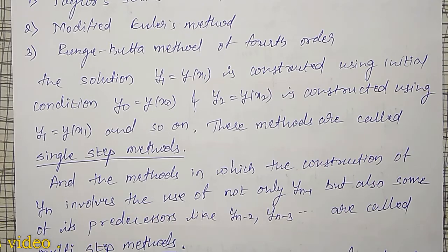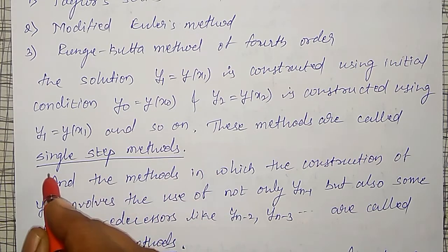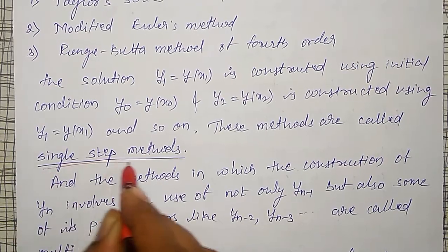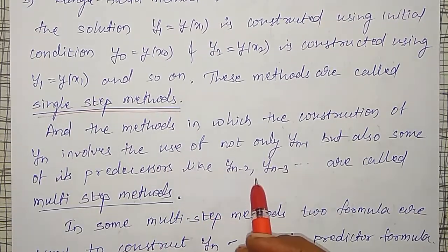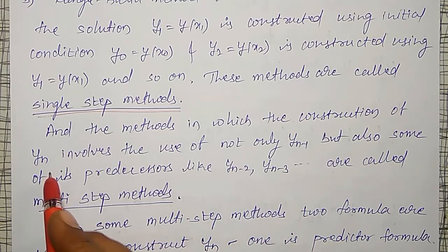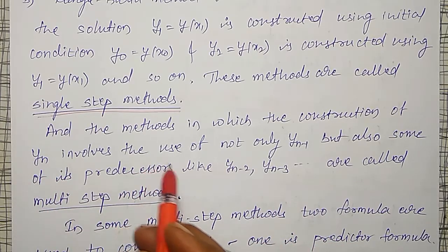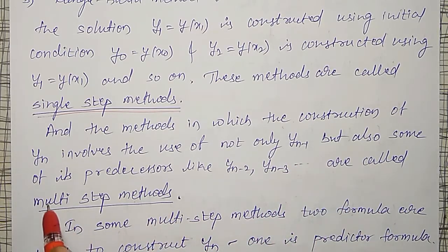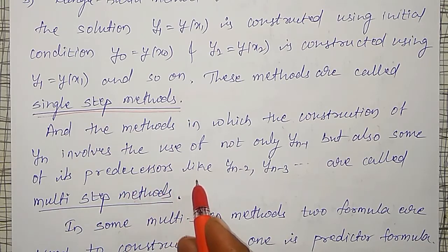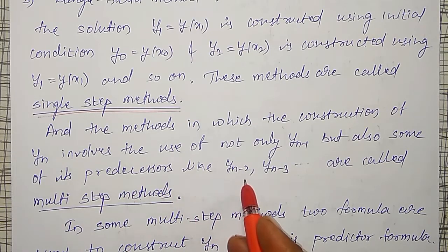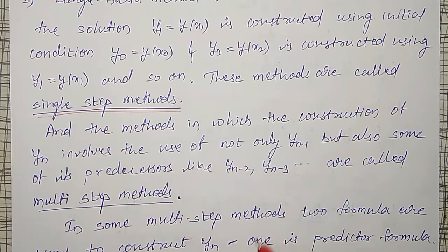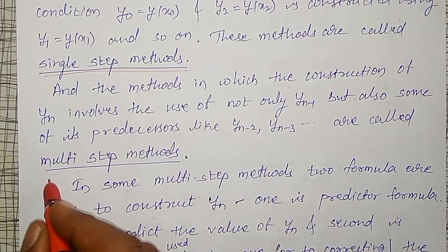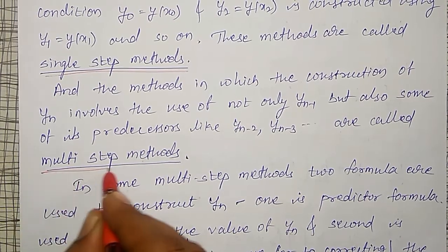To find y2 we use y1 — such methods are known as single step methods. The methods in which the construction of yn involves not only yn minus 1 but also its predecessors like yn minus 2, yn minus 3, and so on — using 2, 3, or 4 previous values — such methods are known as multi-step methods.